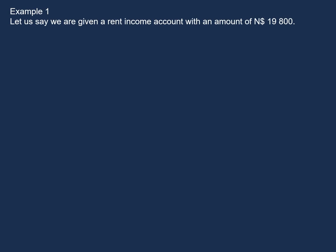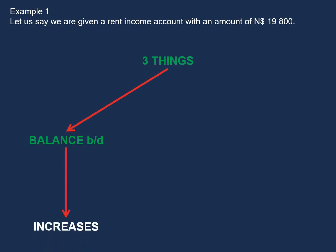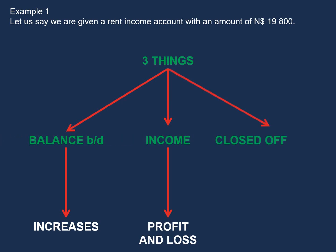Let's have a look at the following example. Let's say we are given rent income with an amount of $19,800. Before we do this transaction, there are three things we need to take note of. We need to know that the balance brought down is entered on the side that the account increases. In this case, we have an income account, so our balance brought down will be on the credit side because our income increases on the credit side. The second thing we need to note is that our income will be transferred to our profit and loss account and that our income will be closed off to the side that it decreases.